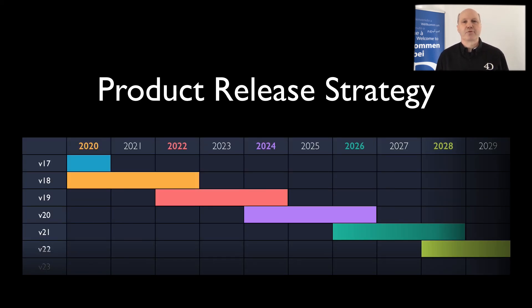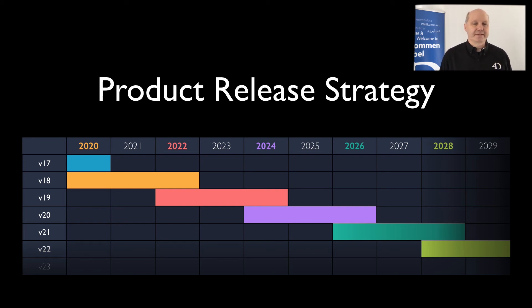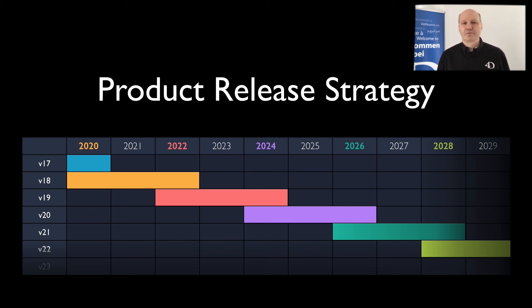To help you plan your own releases and deployments, here is our roadmap. We shipped V18 in January 2020, will ship V19 in January 2022, and V20 in January 2024, and so on. We will support V18 until December 2022, with a similar timeframe for future versions. As you can see, this gives you a calendar year to migrate your customers while both versions are supported.